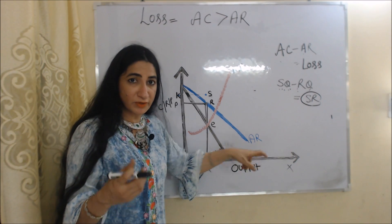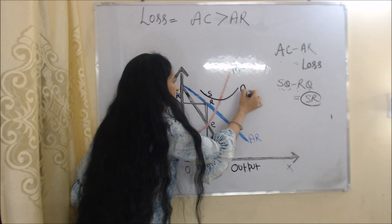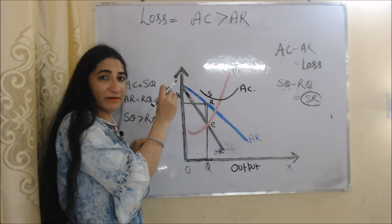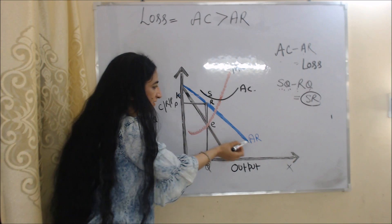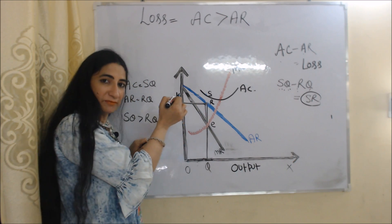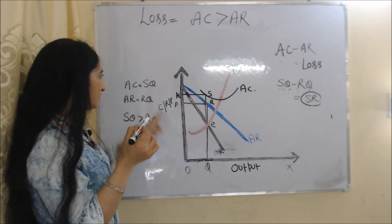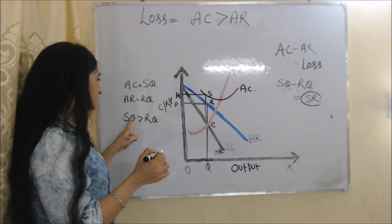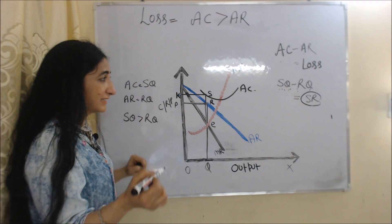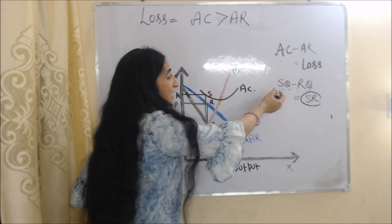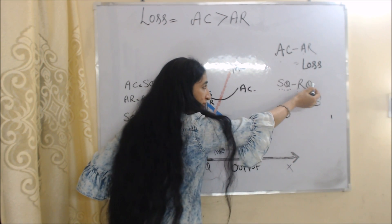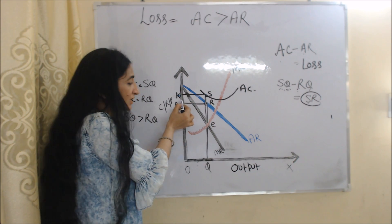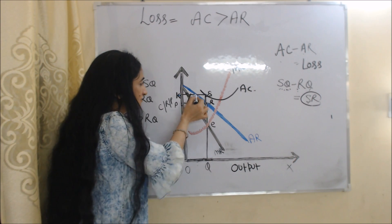So the black curve is average cost and the blue curve is average revenue, with the average cost curve above the average revenue curve. Here SQ is our average cost and RQ is our average revenue. In the case of loss, average cost is more than average revenue — SQ is more than RQ. We calculate loss by subtracting average revenue from average cost: SQ minus RQ equals SR. This SR is our per-unit loss. SR equals KP, so the rectangle PKSR represents our total loss.